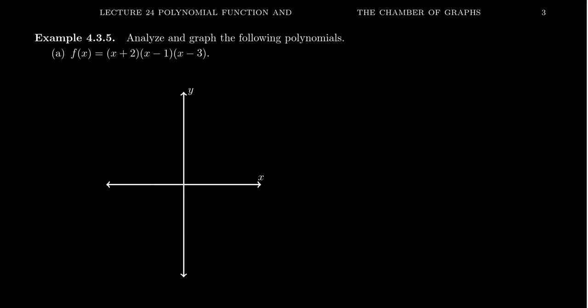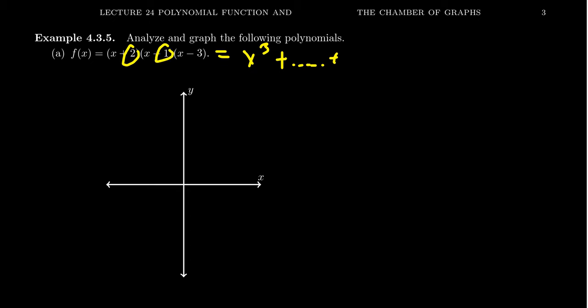Consider the function f(x) = (x+2)(x-1)(x-3). If we multiply this out, the leading term would be x · x · x, which is x cubed. And the constant term comes from the product of all constant terms: 2 × (−1) × (−3), giving us 6. We care about the leading term and the constant term — the leading term gives us the end behavior.